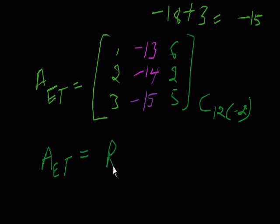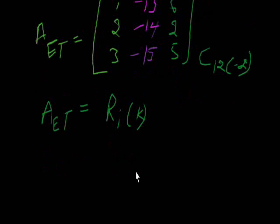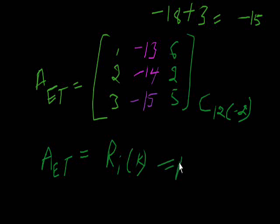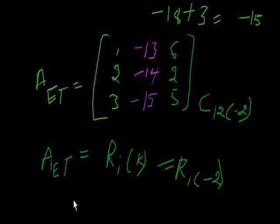The next elementary transformation is: we can multiply row i by any scalar k. Taking row 1 and multiplying with minus 2. The current row 1 has entries 1, 13, and 6.